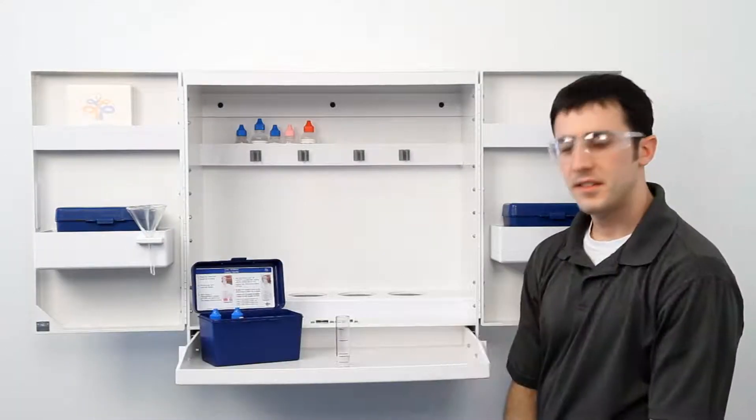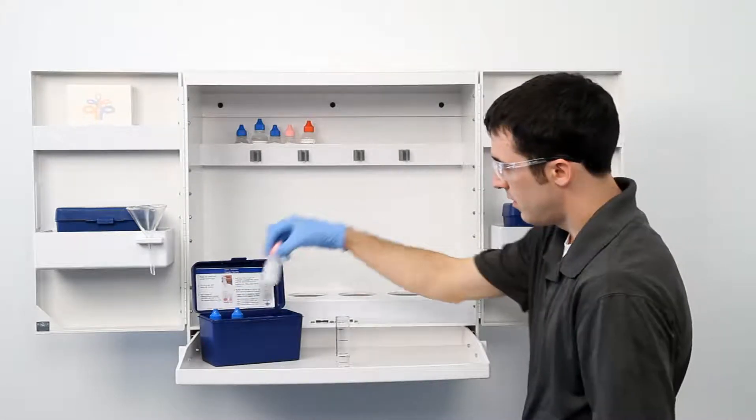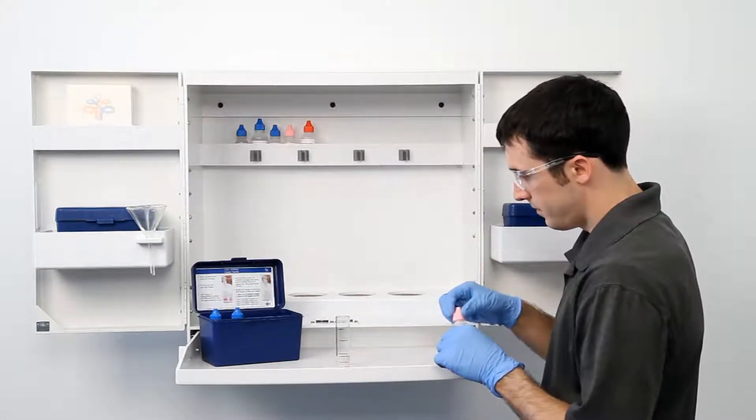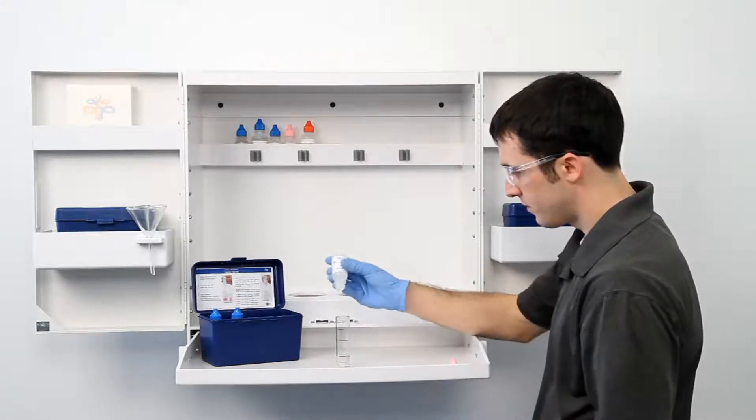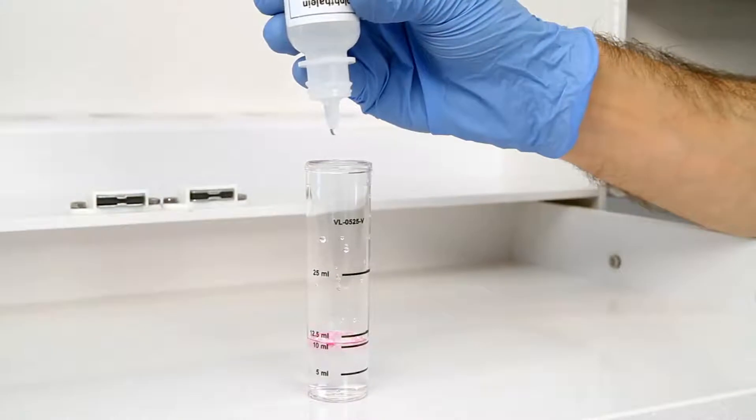Once you have gathered an accurate sample, the next step according to the Endpoint ID procedure is to add three drops of phenolphthalein indicator. The bottle contains a dropper tip, so it's important to hold the bottle vertically to get a consistent drop size.